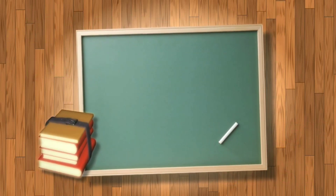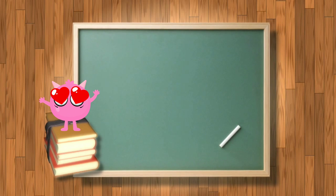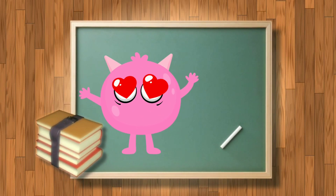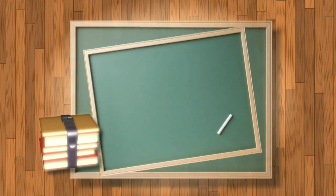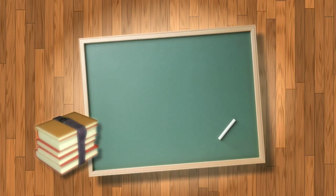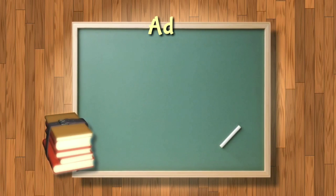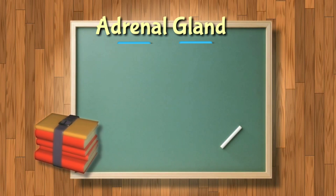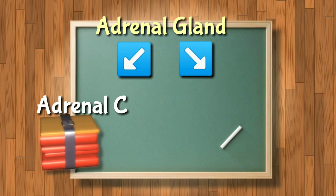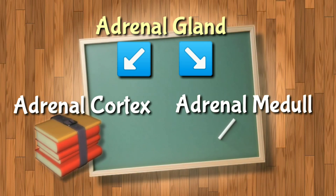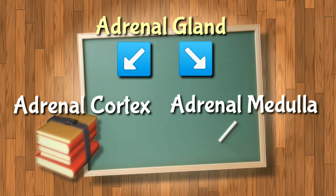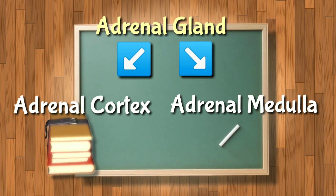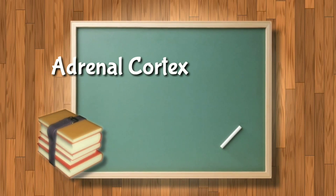So stay with me until the end. Let's start by knowing the teeny-tiny adrenal glands, which are composed of the adrenal cortex and adrenal medulla. Among the two, we will focus on the adrenal cortex.